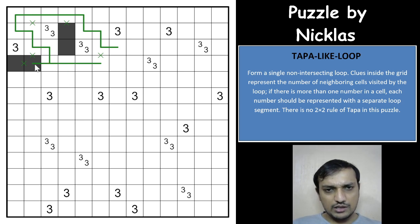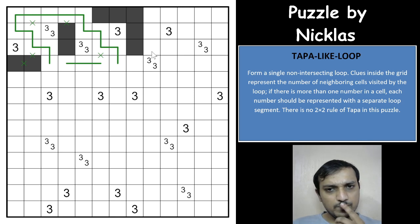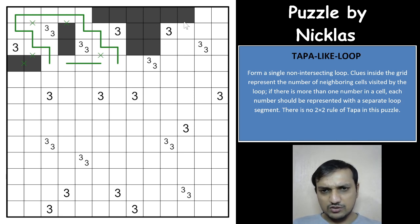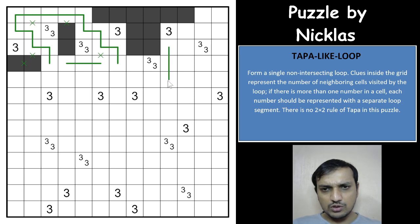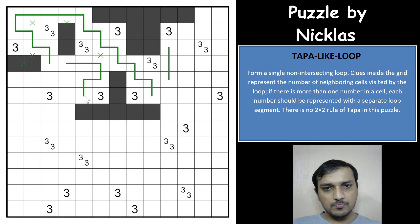The loop will come down here. None of these cells can be used because you'd have more than 3 cells as a loop segment. All 6 cells will be used for this loop segment. I cannot take this loop segment towards the right because you'd have 4 cells used for this clue, so it will have to come down. All of these other cells will be unused. For this clue, either these 3 cells will be used or these 3 cells — so all the other cells can be crossed out.